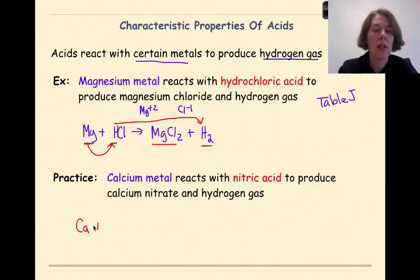Calcium metal can be represented as Ca. Reacts with is a plus sign. Nitric acid, according to your reference table, is HNO3. To produce is an arrow. Calcium nitrate.